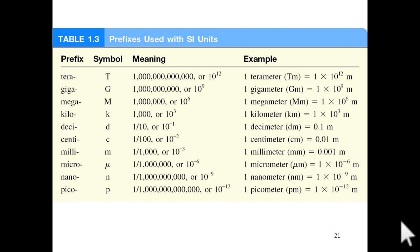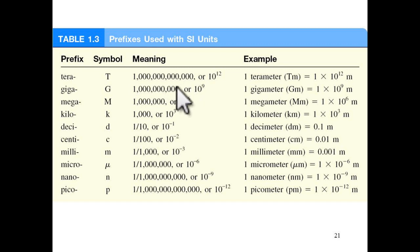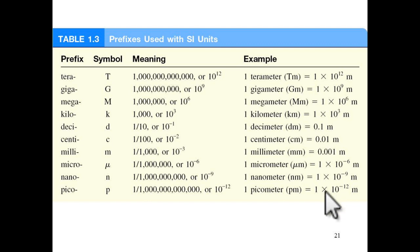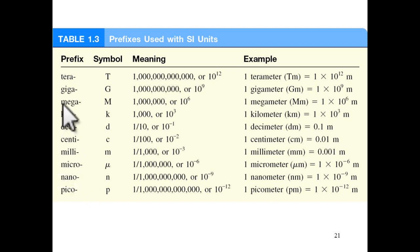A standard unit prefix is used in order to express very large or very small numbers in scientific notation. The prefixes include tera, giga, mega, kilo, deci, centi, milli, micro, nano, and pico — each with their own symbols and values.